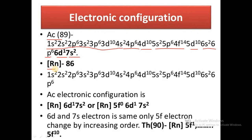Radon, the noble gas element with atomic number 86, has electronic configuration 1s2 2s2 2p6 3s2 3p6 3d10 4s2 4p6 4d10 5s2 5p6 4f14 5d10 6s2 6p6.